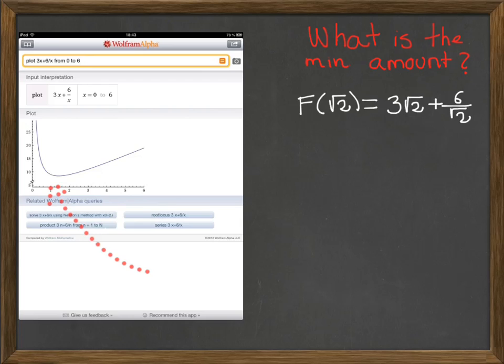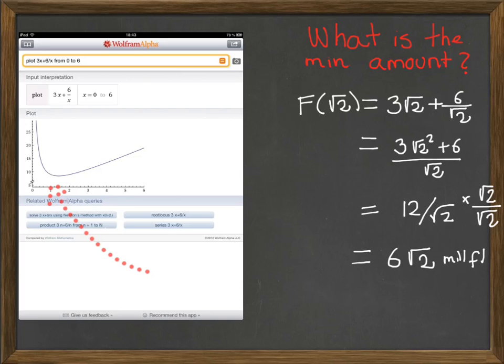So what is the minimum amount of fence? For that we have to evaluate the function in square root of 2. That gives me that the value of the amount of fence is 6 square root of 2 millions of feet.